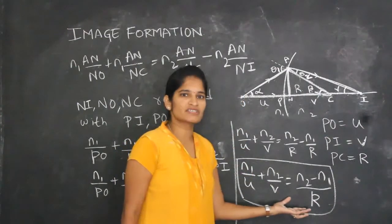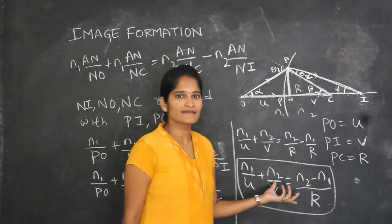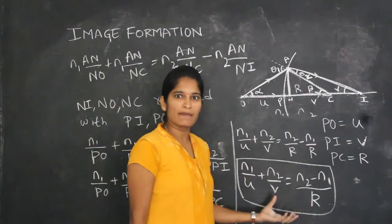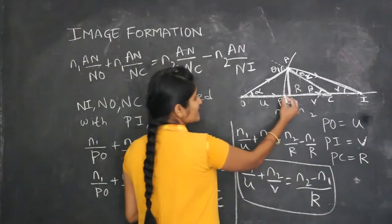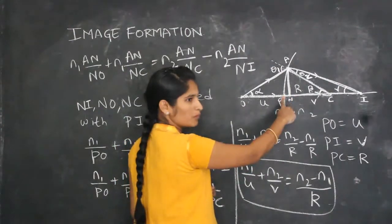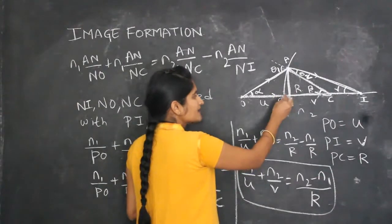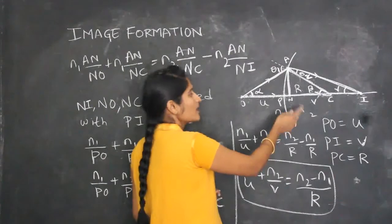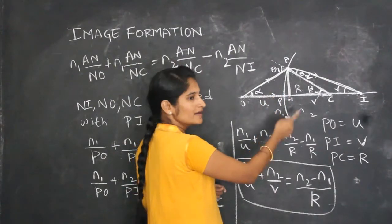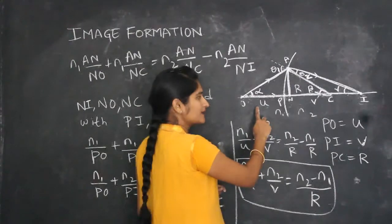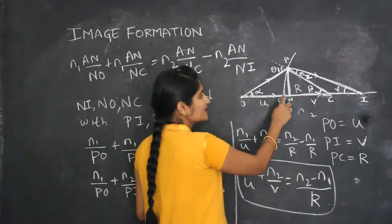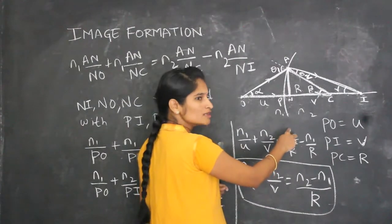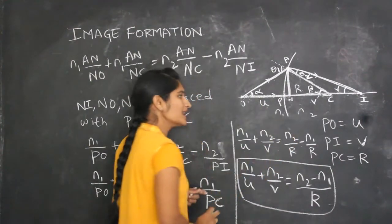To generalize this equation for all cases, we apply sign conventions. All distances are measured from the pole. Distances measured in the direction of the incident ray are positive, and distances measured opposite to the incident ray direction are negative. Heights above the principal axis are positive and below are negative.